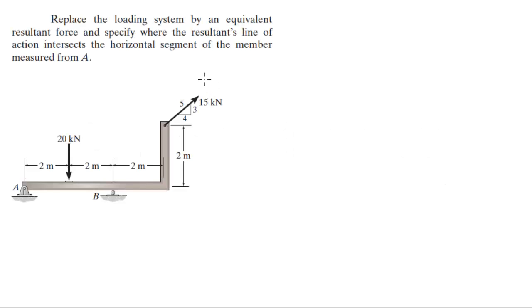Alright, replace the loading system by an equivalent resultant force and find the resultant line of action where it intersects the horizontal segment of the member, measured from point A.